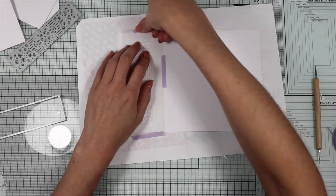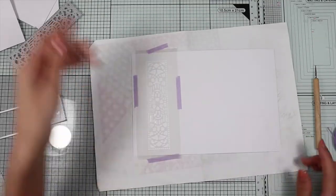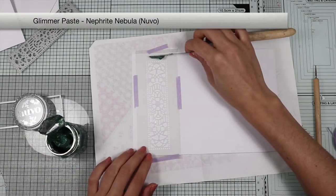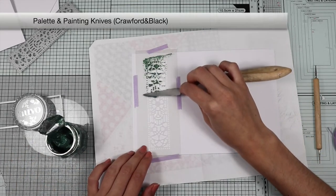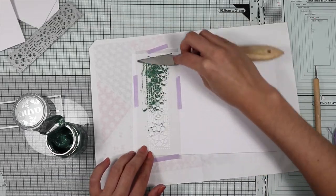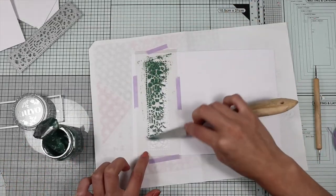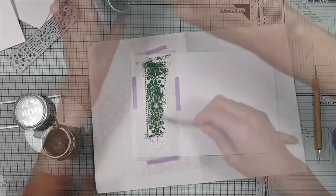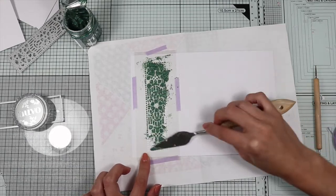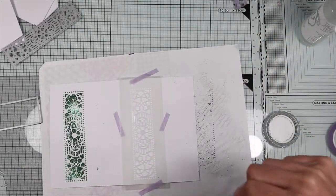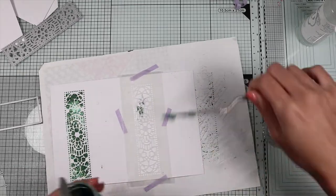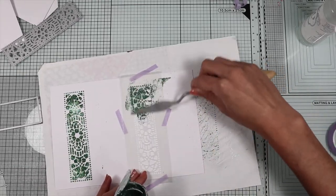Okay, after fixing the stencil on some white cardstock, I'm going to spread the glimmer paste using a spatula. I make two stencils between one and the other. I washed and dried the stencil.